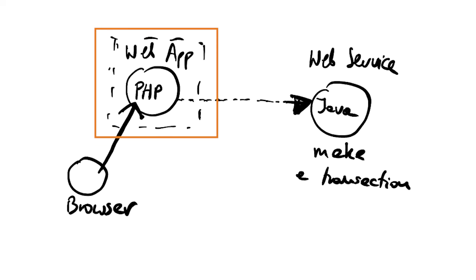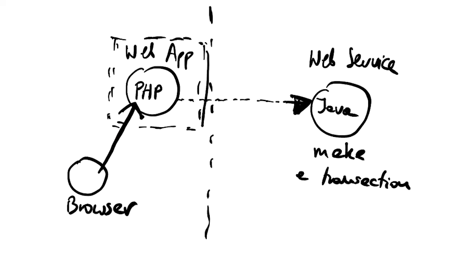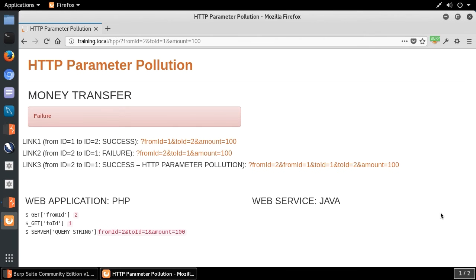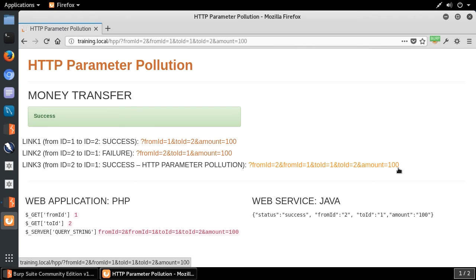The authorization is done in PHP, and my goal will be to bypass this authorization. When the request passes authorization and reaches the Java web service, that service just processes and makes the transaction. My goal is to bypass the authorization here. Now let me jump back to the demo and click this polluted query string to show you how powerful this is.